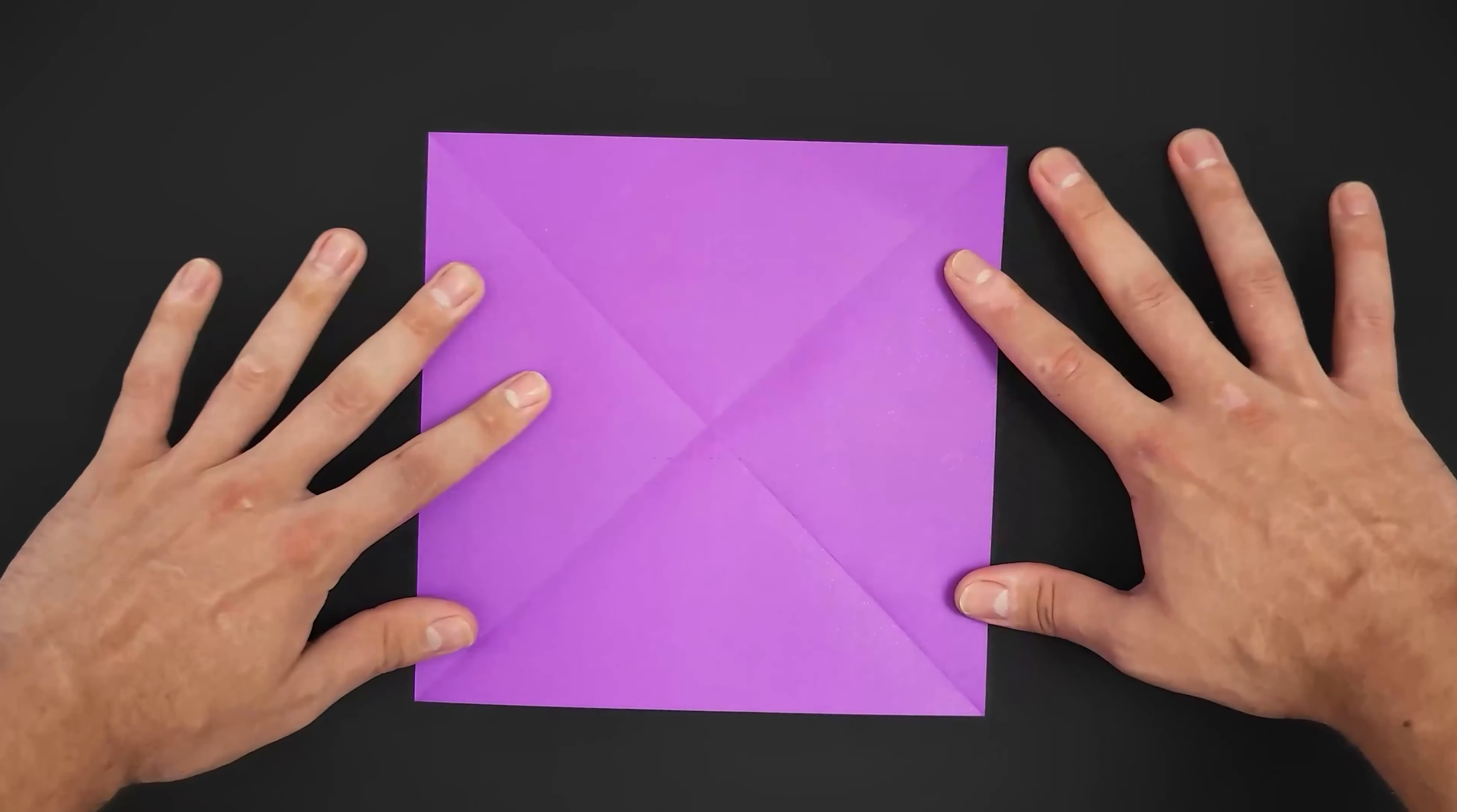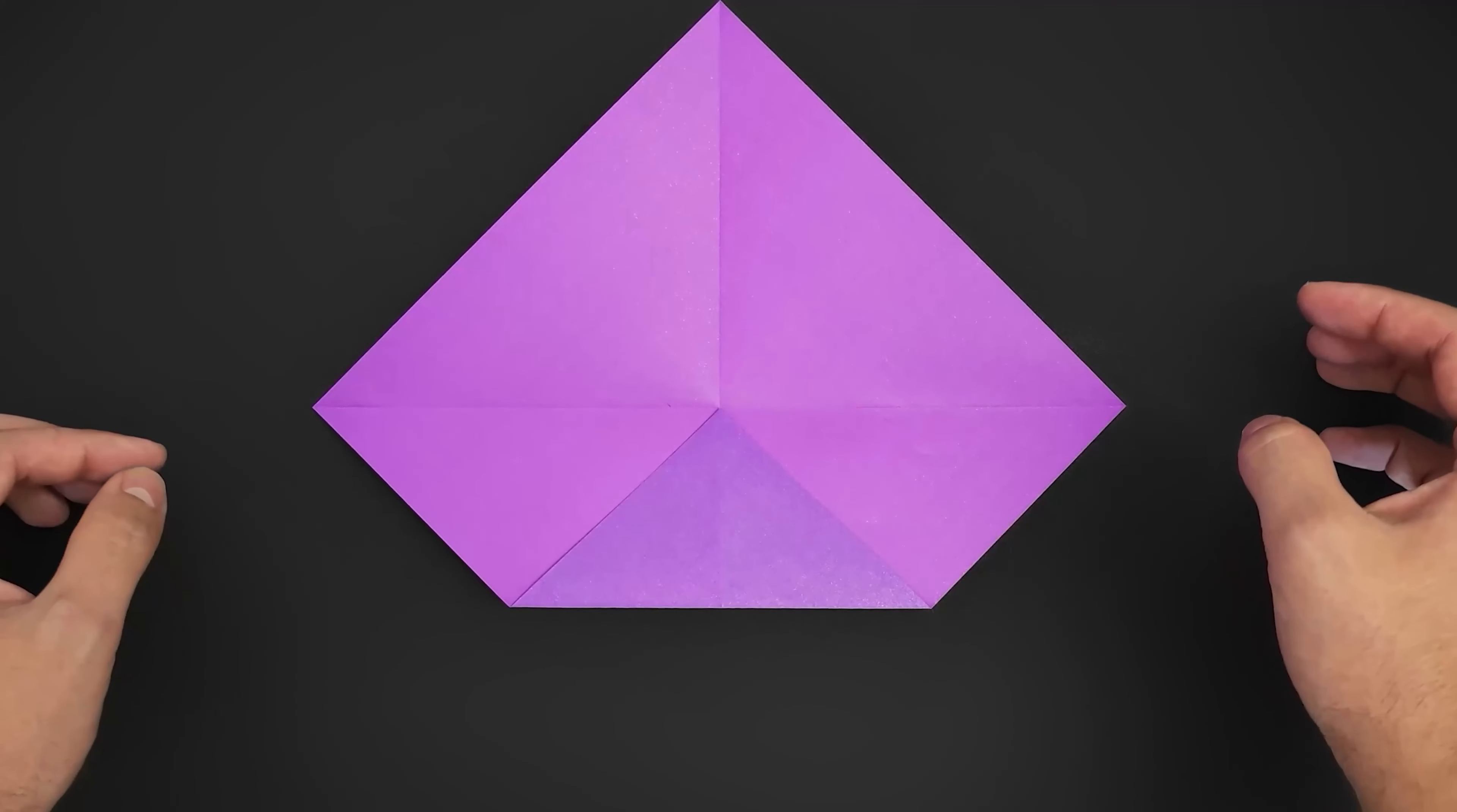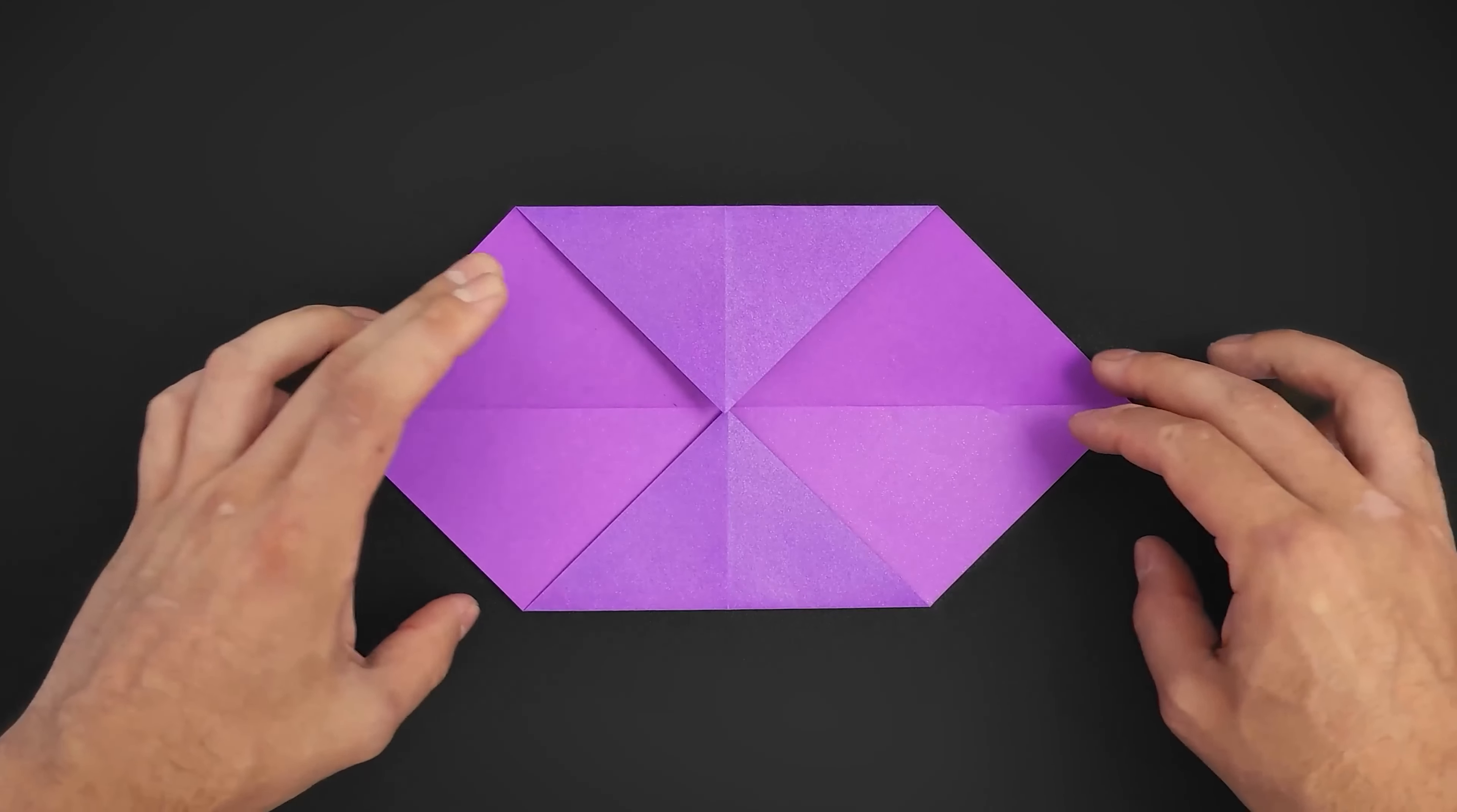Once we have the X, we'll rotate the paper to this position and fold the bottom and top corners to the middle. With those two folds done, we fold the paper in half.